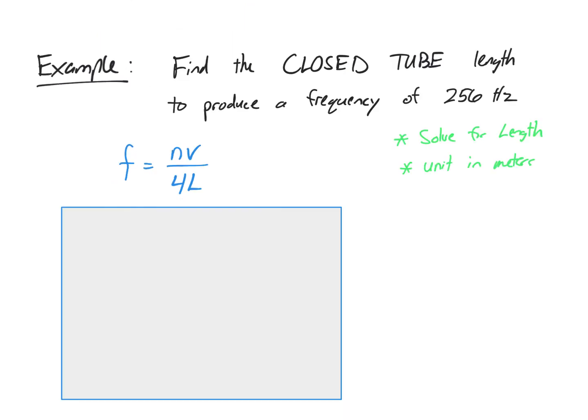I'm going to walk you through an example of a closed tube calculation. So the problem might state it this way. Find the closed tube length that would produce a frequency of 256 hertz. We can use our frequency is equal to the velocity divided by 4L, knowing that this is the first harmonic, so our n becomes one. We want to solve for length and remember that the unit will be in meters.